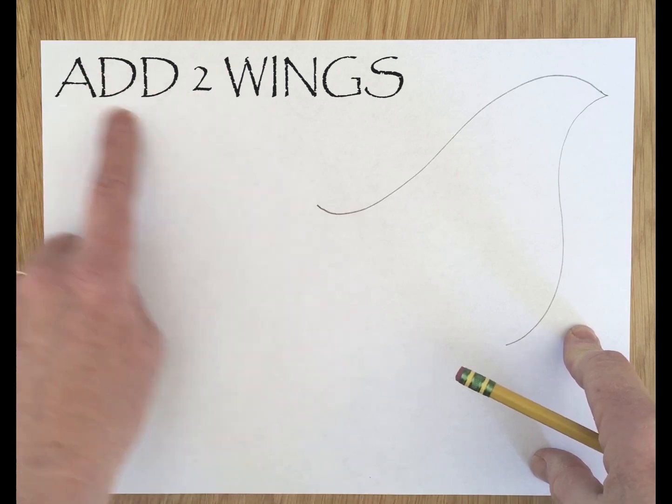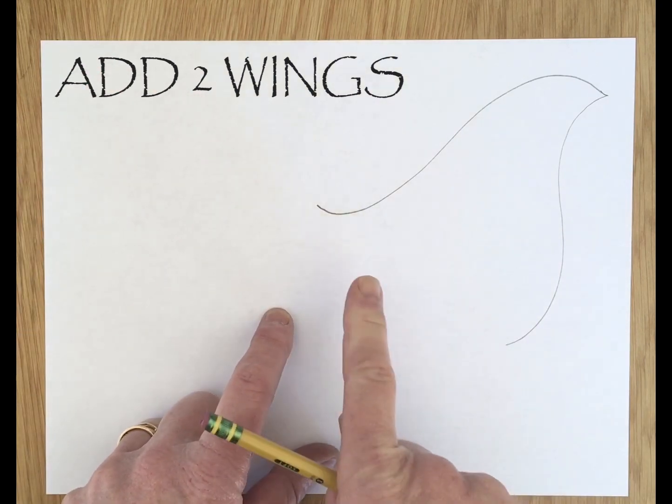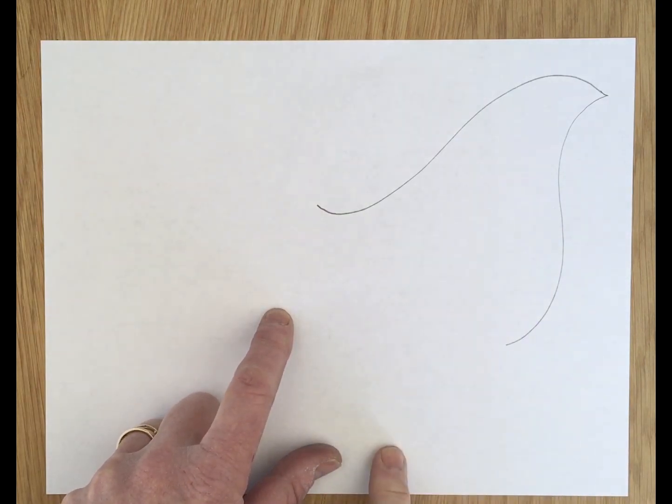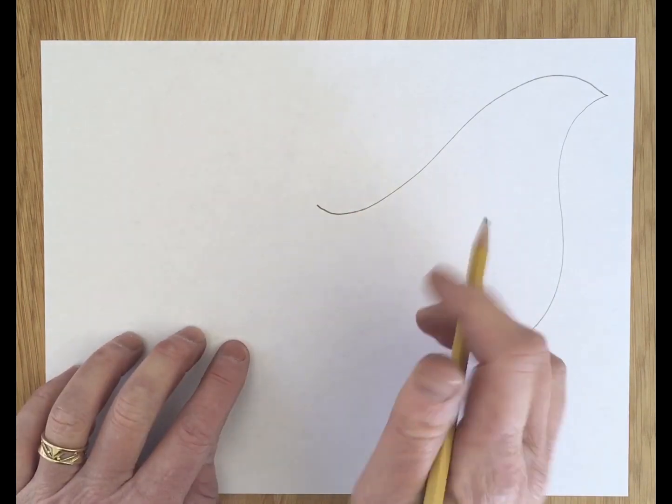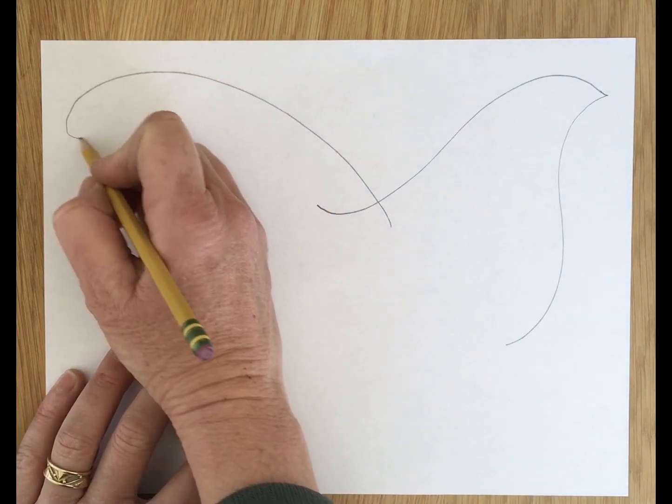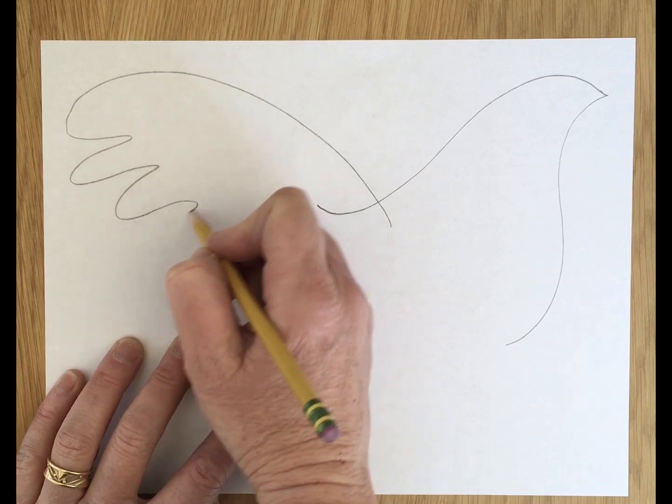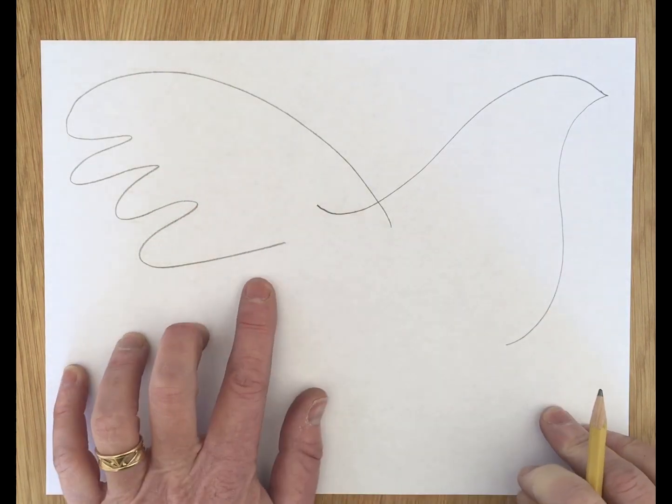Then we're going to place the first wing on the left and then we'll do the second wing to the right. So the wing to the left just move it up and then add a few of the feathers, just squiggly lines like Picasso did.